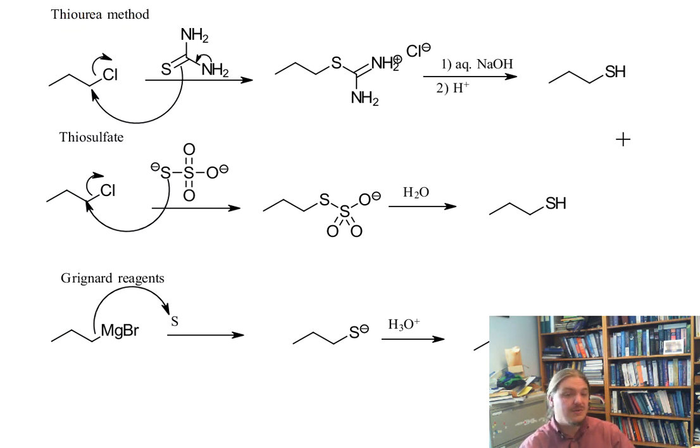We can use thiourea which generates this thiouronium salt intermediate that can be hydrolyzed to the thiol. We could use thiosulfate which generates this thiosulfate ester which could be hydrolyzed to generate the thiol. Or we could use Grignard reagents and react them with elemental sulfur, generate the alkyl thiolate anion, and then neutralize that with aqueous acid to generate the thiol.